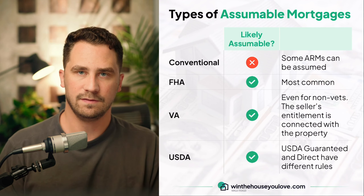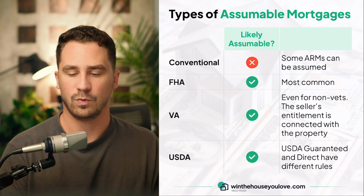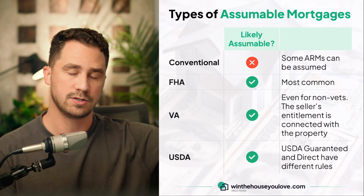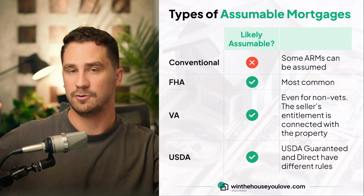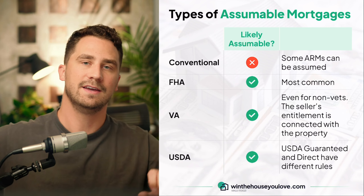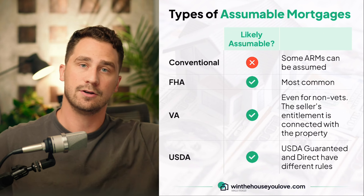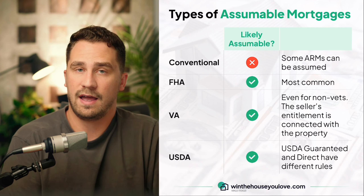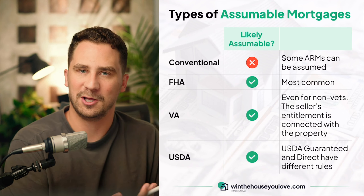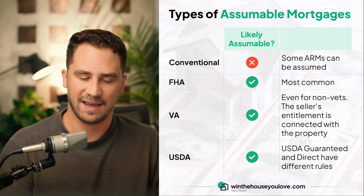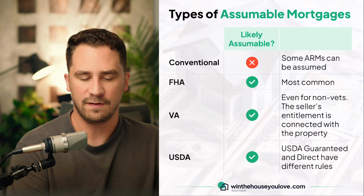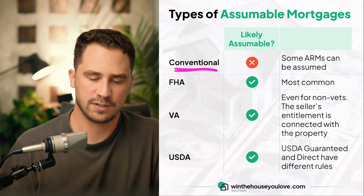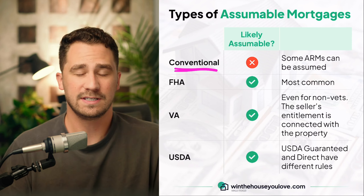There are different types of assumable mortgages and it all depends on what the seller has. Assumable mortgages all center around the seller's mortgage — in an assumption, you're not getting your own mortgage separately, you're taking over whatever the seller has. What you need to do is understand what loan the seller has. If the seller has a conventional loan, it's very likely that an assumption is not going to work. Most conventional loans cannot be assumed, though some adjustable rate mortgages can be.